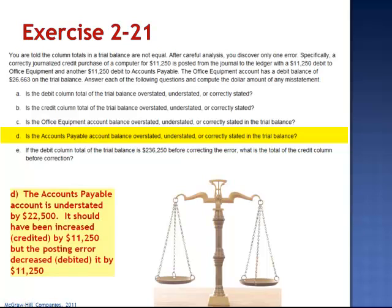The accounts payable account is understated by $22,500. It should have been increased, credited by $11,250. But the posting error decreased, debited the account by $11,250.